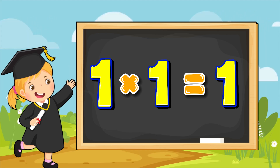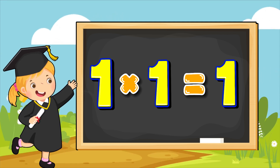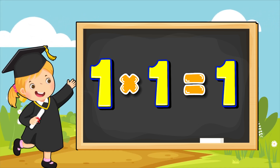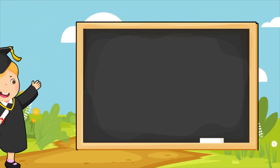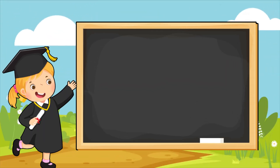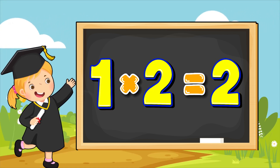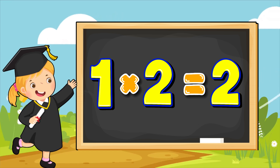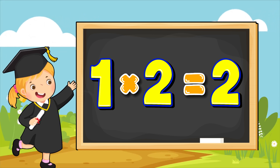1 multiplied by 1 equals to 1. Repeat after me. 1 multiplied by 1 equals to 1. 1 multiplied by 2 equals to 2. Say it loud! 1 multiplied by 2 equals to 2.